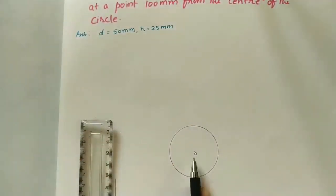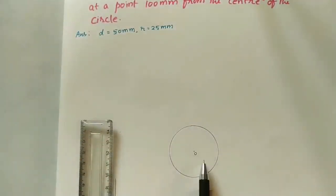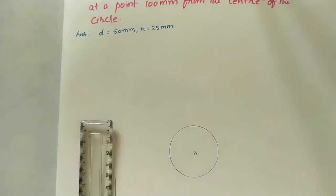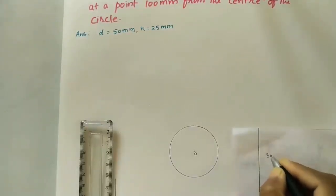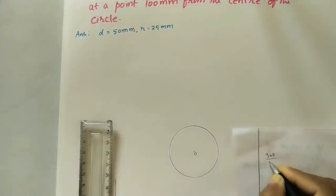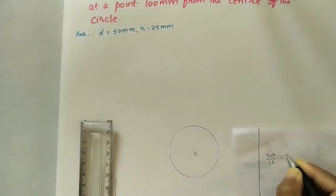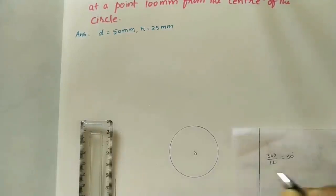After doing the circle, divide this circle into 12 equal divisions. As we know, the angle at the center is 360 degrees. We have to divide this 360 degrees into 12 equal divisions. It is 360 by 12, which is 30 degrees. Each angle is 30 degrees.